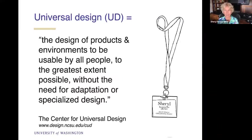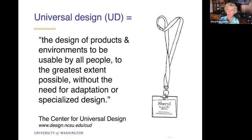Universal design is a very simple concept: the design of products and environments to be usable by all people to the greatest extent possible without the need for adaptation or specialized design. We'll still need accommodations, but what are some things we can do — particularly some of the easier things — that can make the course more inclusive of students with disabilities and others as well? That definition is from the Center for Universal Design at North Carolina State University.